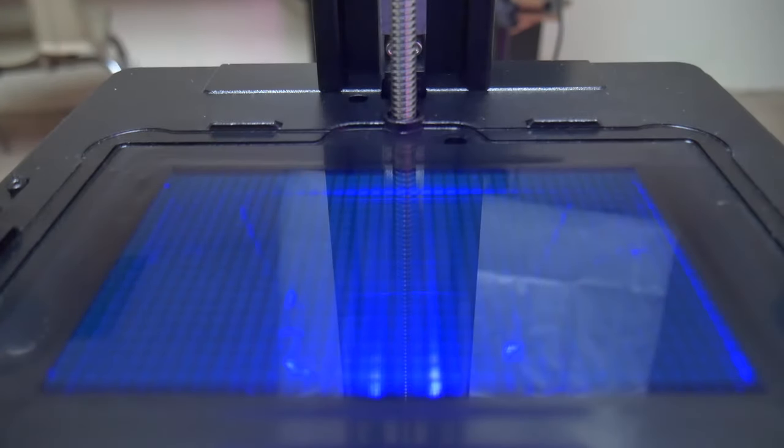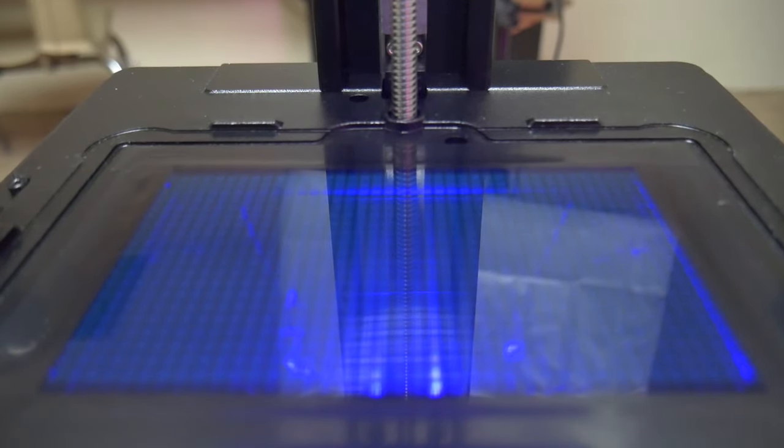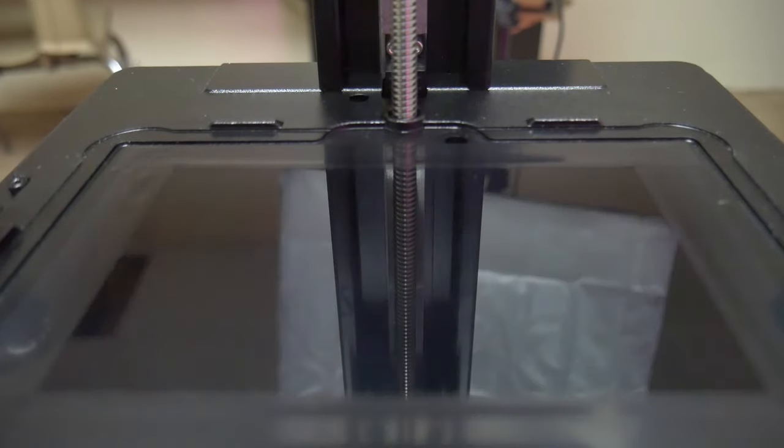The benefit of using a monochrome screen over a traditional RGB LCD screen is that monochrome screens have a longer service life, and without the RGB filter interfering with the light transmission, it takes a shorter amount of time to expose each layer of your print.